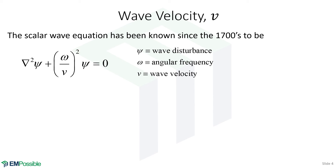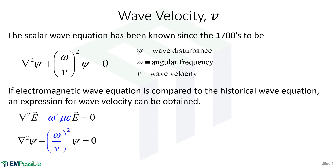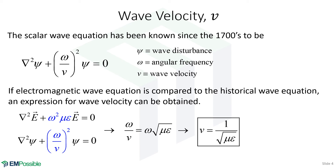That wave equation was known for a very long time. Along comes Maxwell, adds the displacement term to Ampere's law, and is able for the first time to derive the electromagnetic wave equation. Comparing the two, there's now a way to calculate the velocity of a wave from these fundamental parameters. This omega-squared mu-epsilon, which up till now was just a strange collection of terms, has to equal omega over velocity squared. So we simply set those equal and solve for velocity. The speed of a wave is really just a function of permeability and permittivity — and we're talking about electromagnetic waves here.